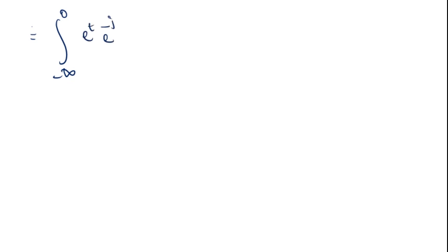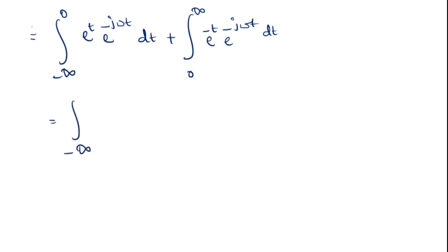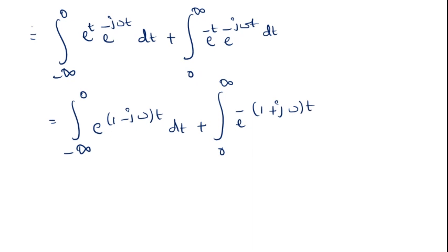This equals the integral from minus infinity to 0 of e^t times e^(−jωt) dt, plus the integral from 0 to infinity of e^(−t) times e^(−jωt) dt, which simplifies to the integral from 0 to infinity of e^(−jωt) dt.